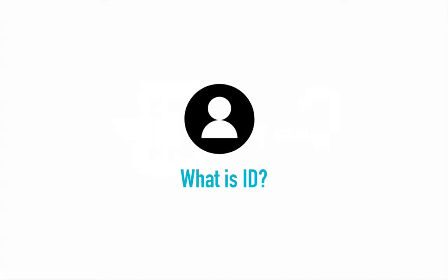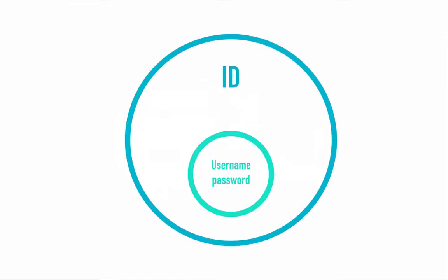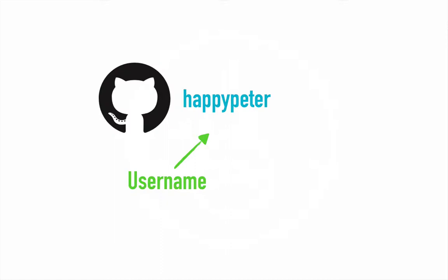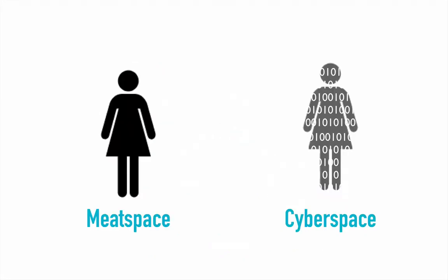A simple question first: what is ID? In the digital world, a user ID is made of everything we see, do, and experience. Your ID is more than your username and password. For example, my GitHub username is HappyPeter. HappyPeter is my ID identifier, and my password is like the secret key to prove I own my ID — but it is very different from a private key, which we will talk about soon. So HappyPeter is not my ID; it is the identifier of my ID. Your ID is a virtual you in digital form — everything that defines you in the digital world, a collection of all your personal data generated with technology.